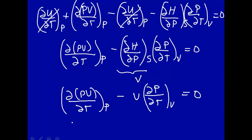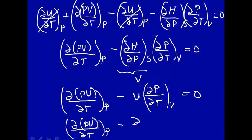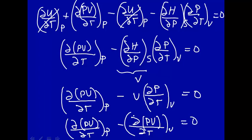Let's rewrite this in anticipation of where we're going: how PV changes with temperature at constant pressure, minus V — since V is a constant we can pull it into the derivative — how PV changes with temperature at constant volume, equals zero. This term equals that term, and therefore when you subtract the two you get zero. But let's show that explicitly using the ideal gas law.